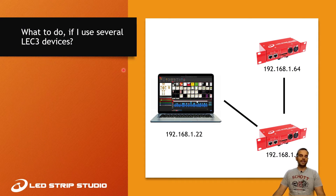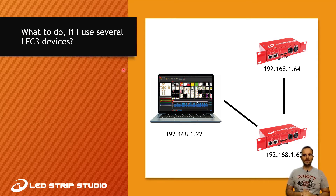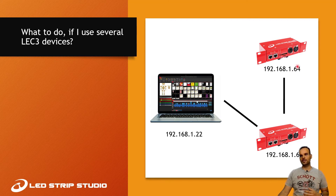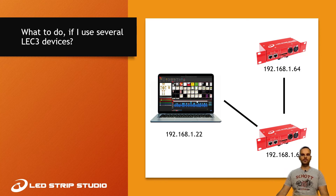A question we often get is: how do you set the IP address if you have several devices? We always recommend connecting one device, changing its IP address — for example to .64 — then connecting the second device to your network and changing its IP address from .147 to .65. It takes some time, but it's easy to do.